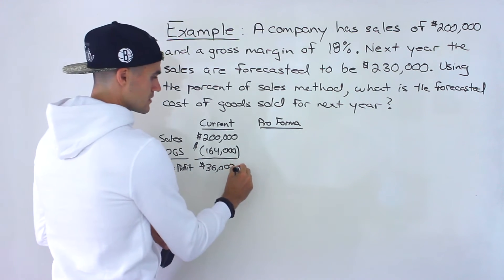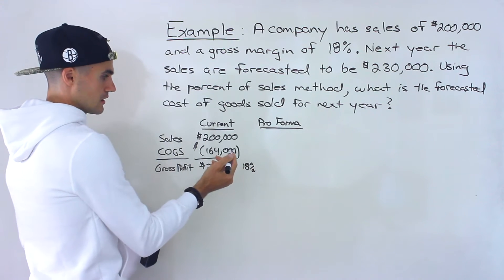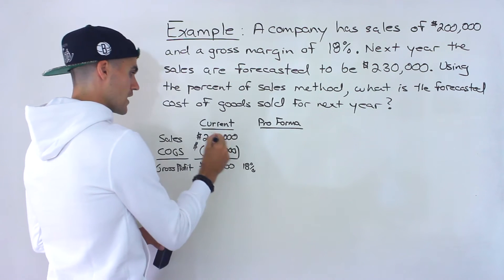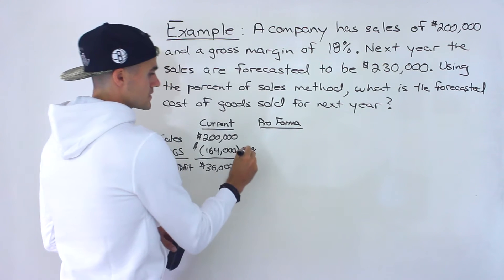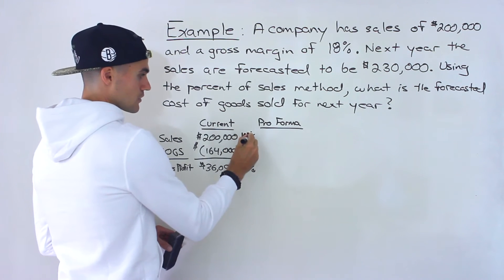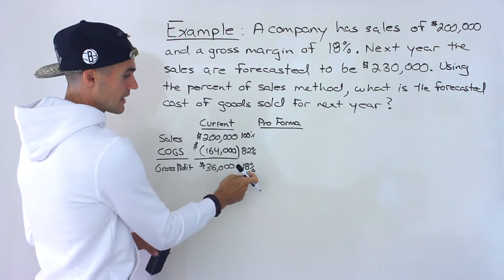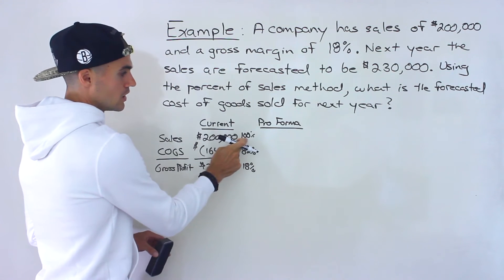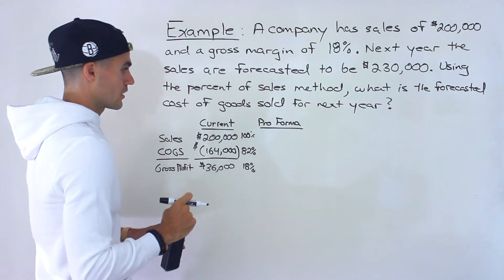The cost of goods sold of $164,000 divided by $200,000 is 82%. We could also get this 82% by taking 100% and subtracting that 18%, because both gross profit and COGS have to add up to 100% of sales. So 100% minus 18% gives us that 82% for cost of goods sold.